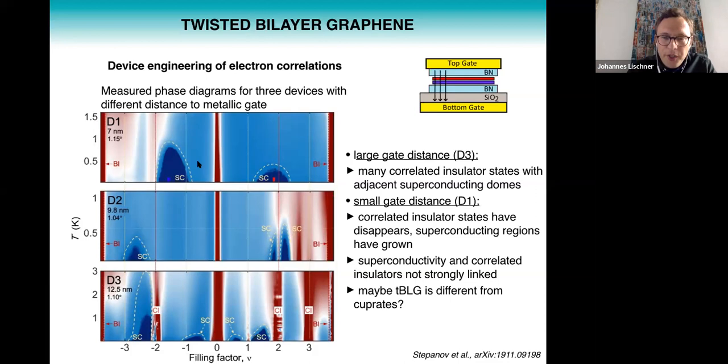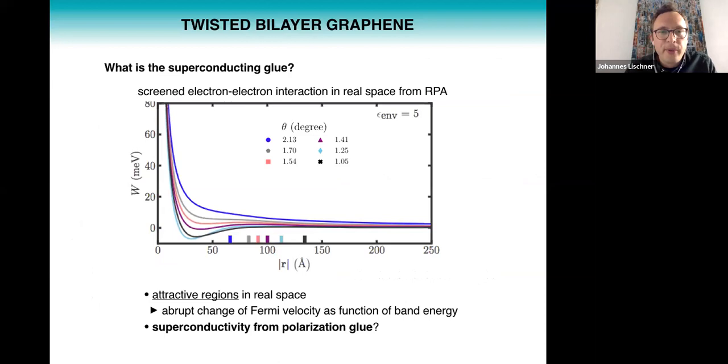And that was one hypothesis also for twisted bilayer graphene. Another hypothesis is that phonons could be the glue. But we also discovered a third possibility where essentially the glue that pairs electrons could be a polarization glue. So to explain this a little more...